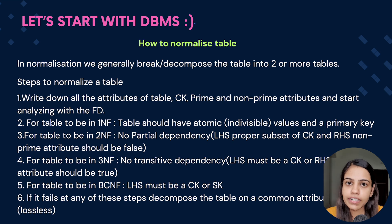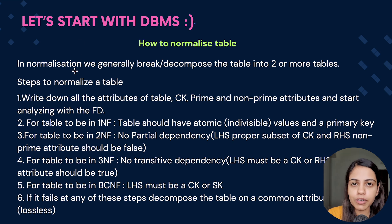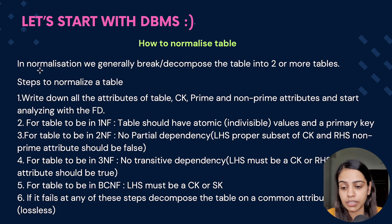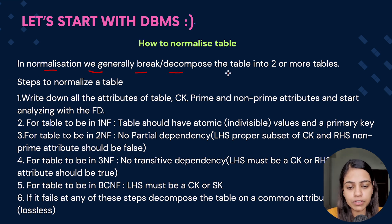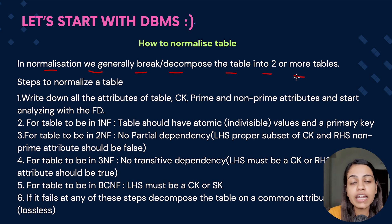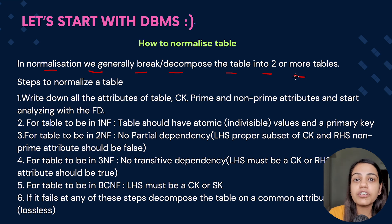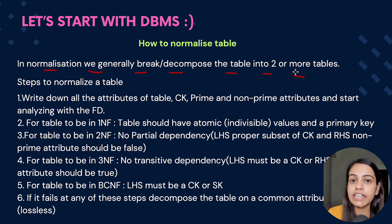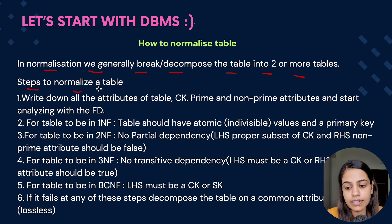We have already learned about normalization, types of normal forms and much more. Now let's see how we can normalize a table. In normalization we generally break or decompose the table into two or more subtables. How would that decomposition happen? How would we know that we have to decompose the table and how we should decompose it? Let's see the steps to normalize a table.